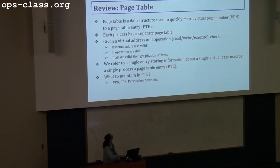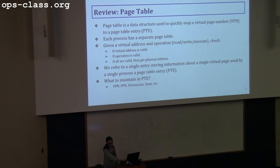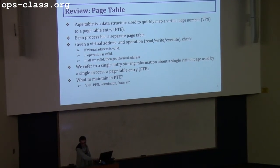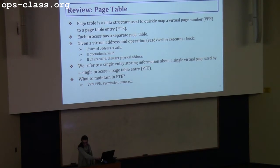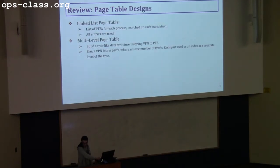To quickly go over what we covered in 3.2: we presented you with a page table. The page table maps VPN to PTEs and each process has its own page table. We refer to a single entry that stores information about a virtual page as a page table entry. What you need in a PTE is basically a VPN and its corresponding PPN, permission and state, and other information. We discussed the design you can use for your page table data structure.